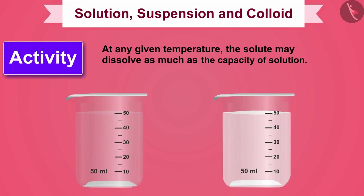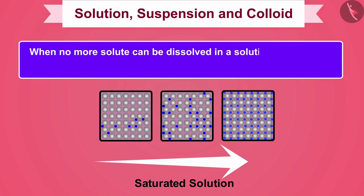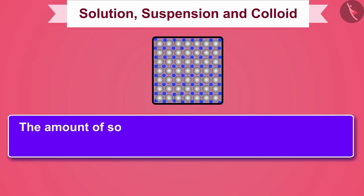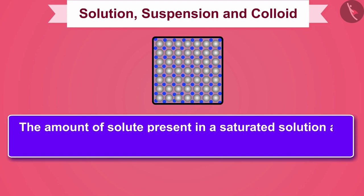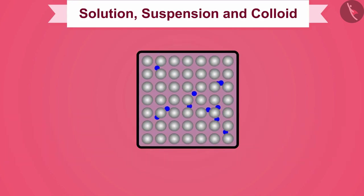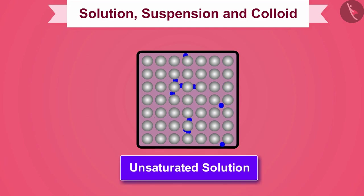At any given temperature, the solute may dissolve only up to the capacity of the solution. When no more solute can be dissolved in a solution at a given temperature, it is called a saturated solution. The amount of solute present in a saturated solution at that temperature is called its solubility. If the amount of solute in a solution is less than the saturation level, it is called an unsaturated solution.